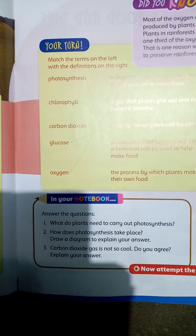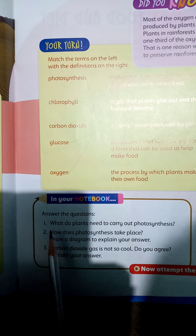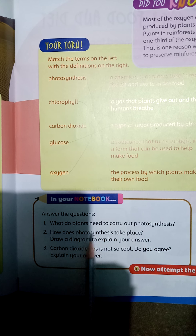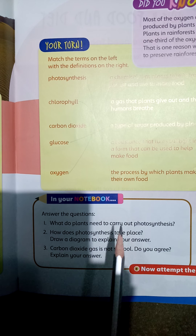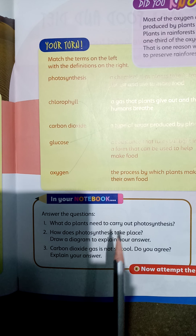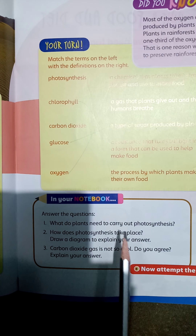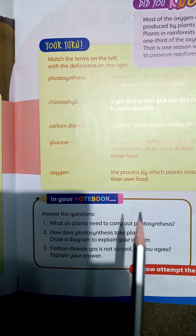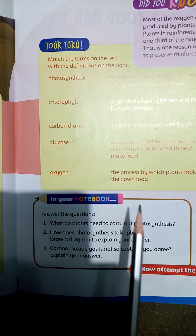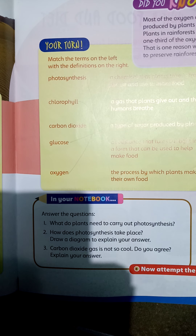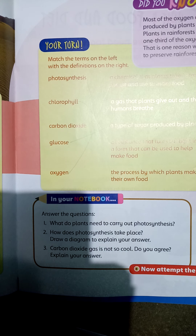Revise the first question: What do plants need to carry out photosynthesis? Students answered: sunlight, water, chlorophyll, and carbon dioxide.